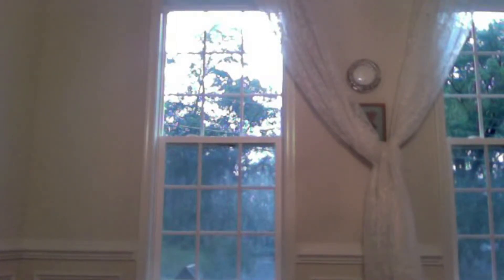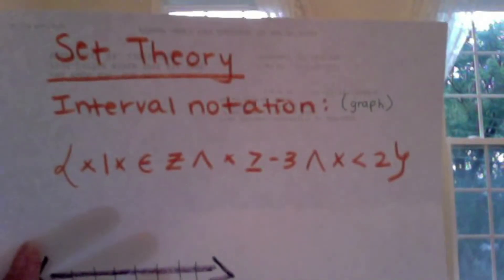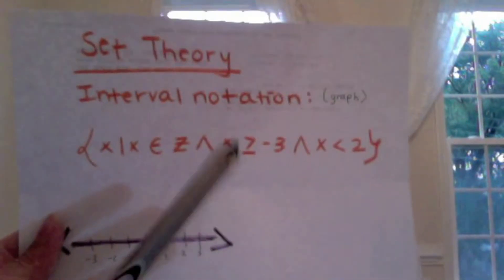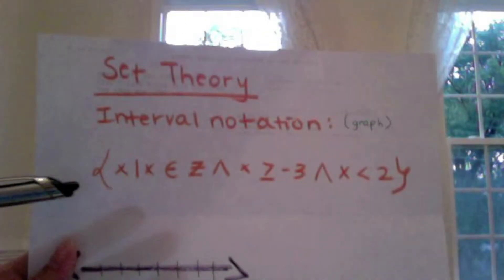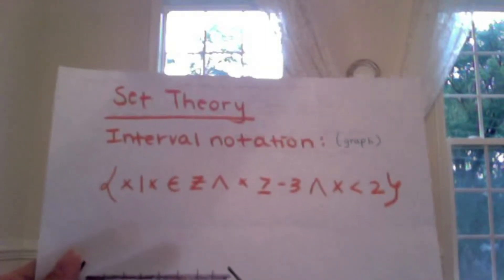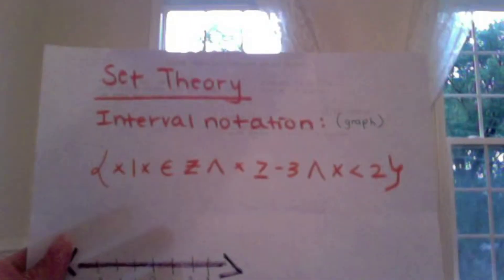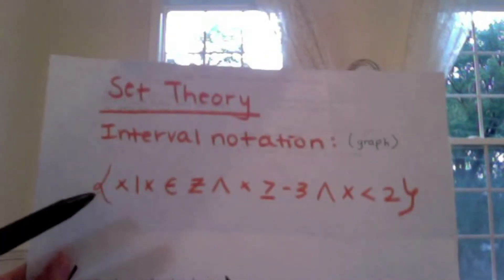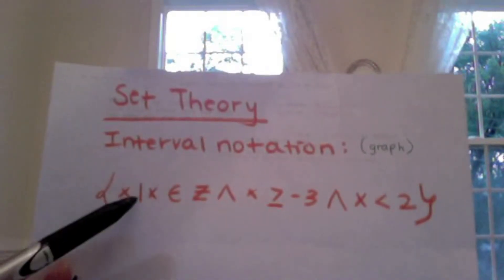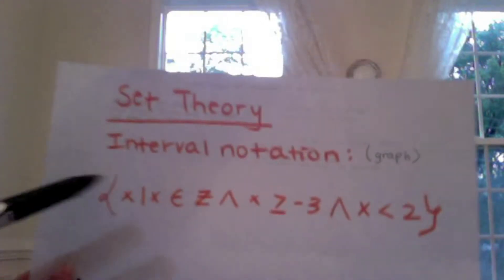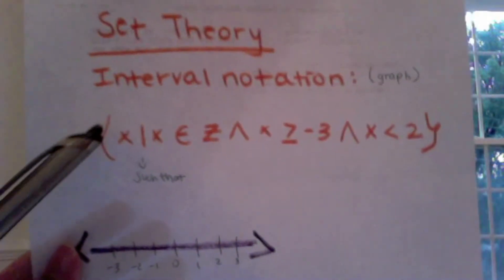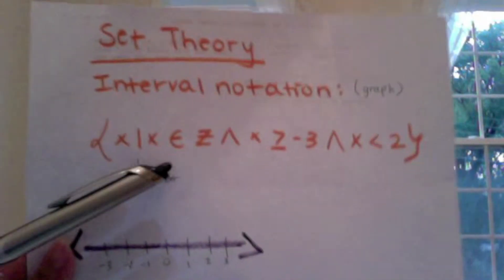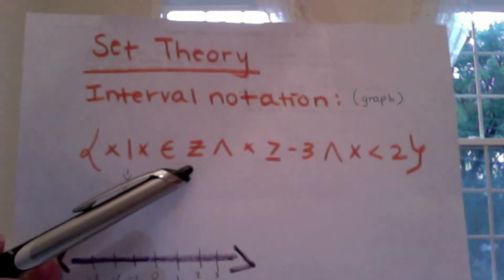Hi everyone, today I'm going to be talking about set theory, especially about interval notation. I have interval notation written out and we're going to be learning how to graph set builder notation. The first part of set builder notation is your curly brackets. Then we have the X, and this bar line means 'such that,' so this line basically means 'such that.'